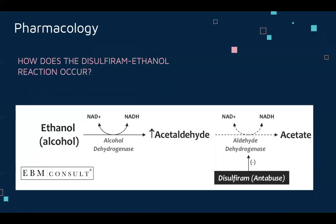How the disulfiram and ethanol reaction works: the liver metabolizes the alcohol first — alcohol is converted into acetaldehyde by an enzyme called alcohol dehydrogenase, or ADH, and then the acetaldehyde is converted into acetate by aldehyde dehydrogenase. Disulfiram prevents the aldehyde dehydrogenase from metabolizing the acetaldehyde, therefore leading to an accumulation of acetaldehyde. That accumulation is what causes the negative symptoms, because your body isn't used to having excess acetaldehyde, and because alcohol isn't allowed to be metabolized normally due to the interference of disulfiram, that's what causes the negative, unpleasant reaction.